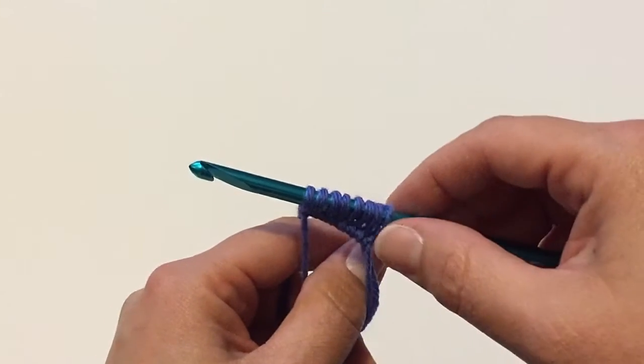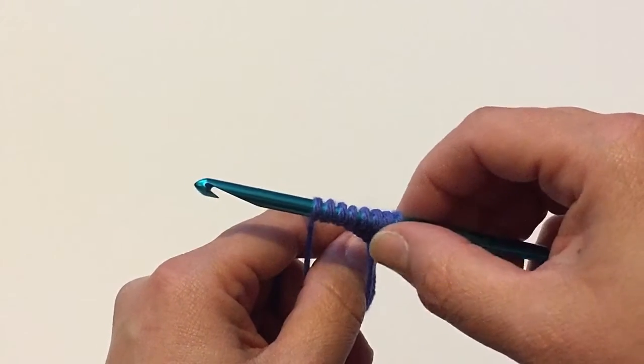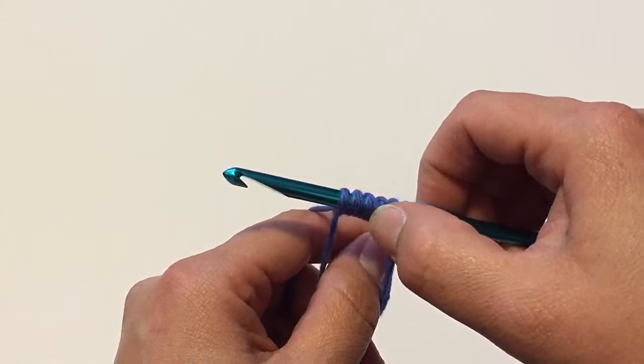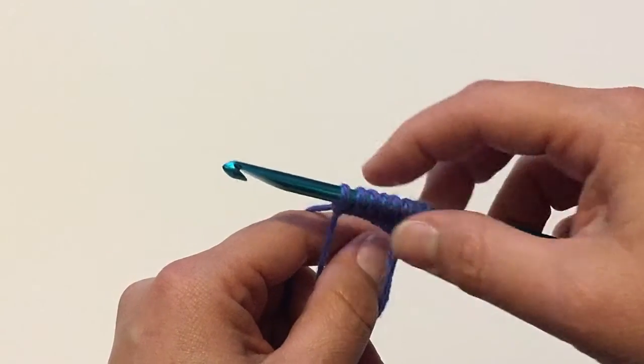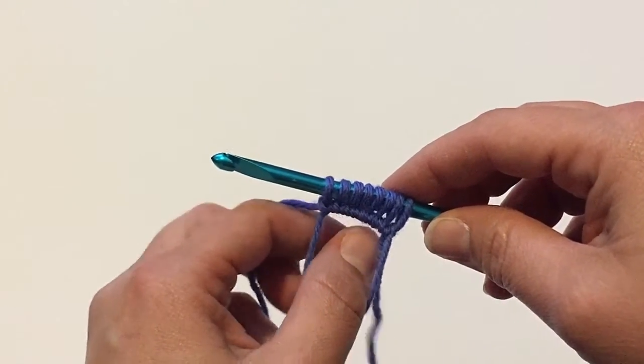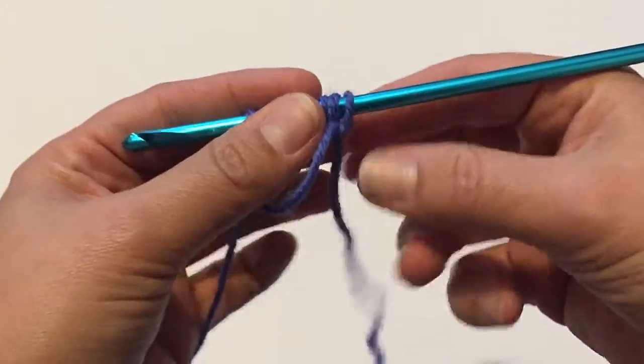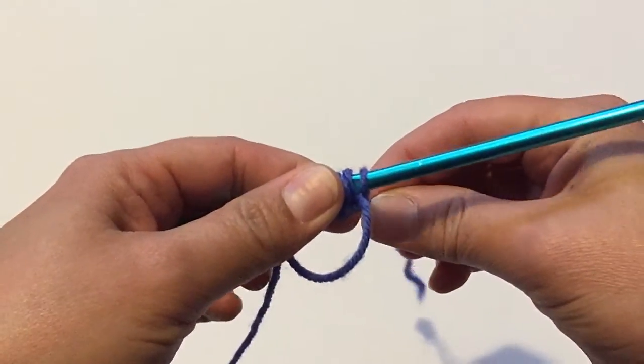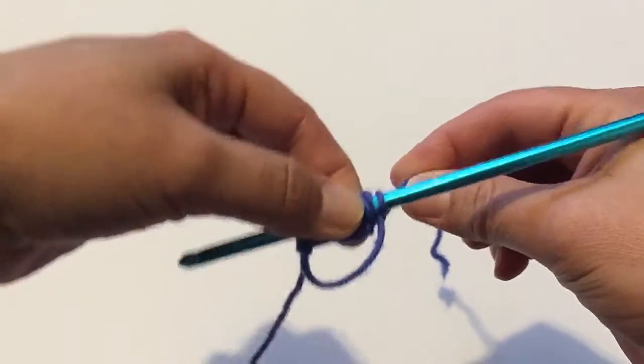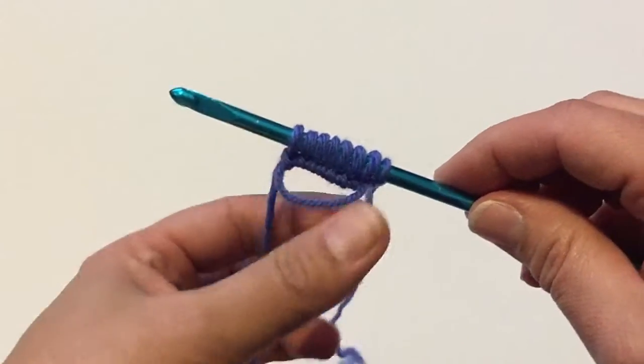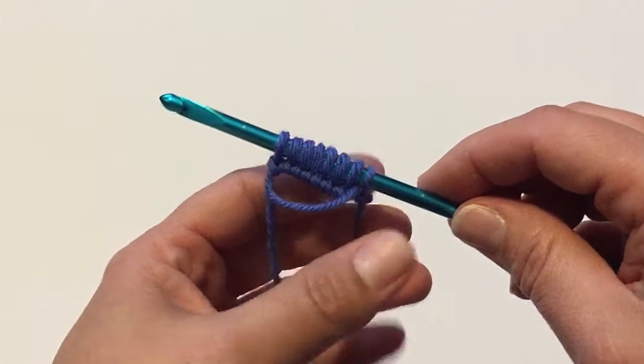I finished casting on eight stitches. So one, two, three, four, five, six, seven, eight. If you want to check to make sure that you did this right, you can take that loose end and just give it a little bit of a pull and you'll see that my loop is starting to close up. So that is what you want to see happen.